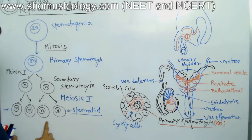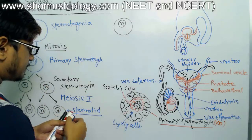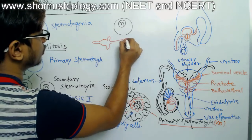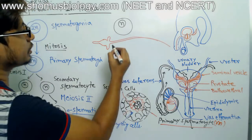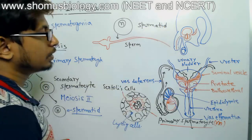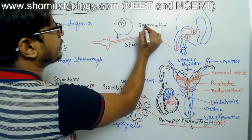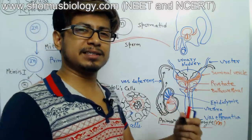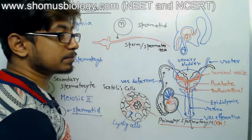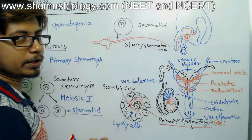The final step of modification converts the spermatid into the mature sperm structure. This conversion of spermatid into sperm is known as spermiogenesis. Once converted, the mature cell is known as spermatozoa — spermatozoa is the formal name for sperm. Remember all these names because questions are often asked about them.